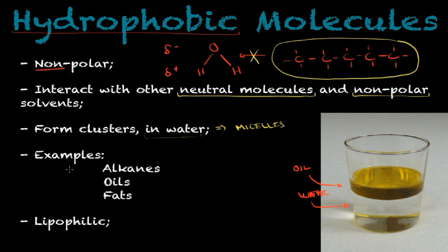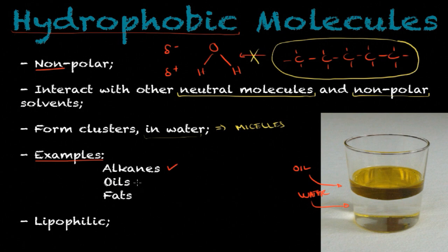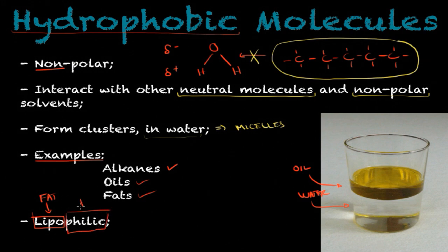Another thing I would like to mention about hydrophobic molecules are examples. We have alkanes, which are molecules rich in carbon chains — saturated chains, meaning that all the carbons are forming bonds with other atoms, mainly hydrogen atoms. Another example of hydrophobic molecules are oils and of course fats. Some of these molecules are also called lipophilic — lipo means fat, and philic means love. They fear water but love fat, because fats are hydrophobic molecules, so they interact with similar molecules.